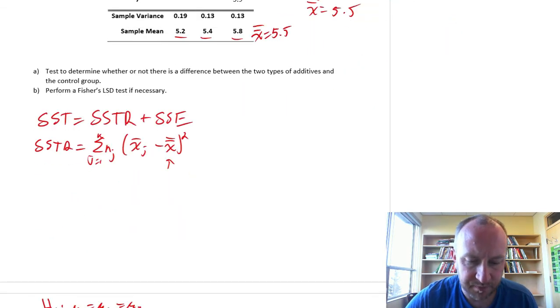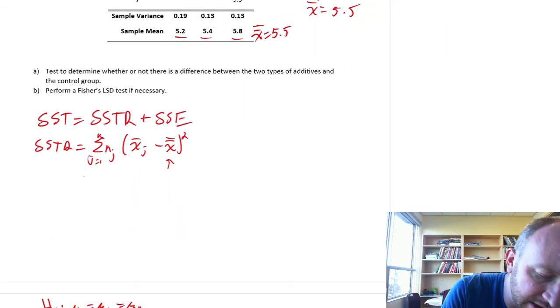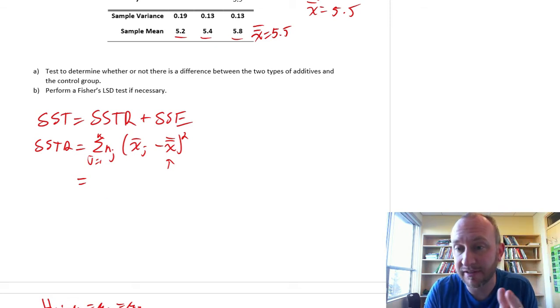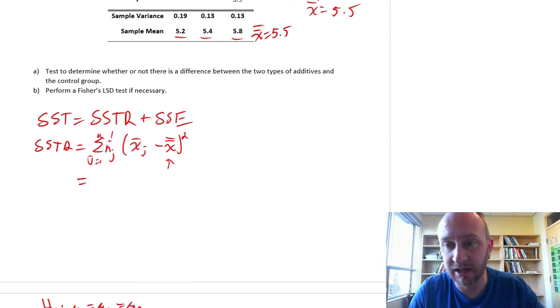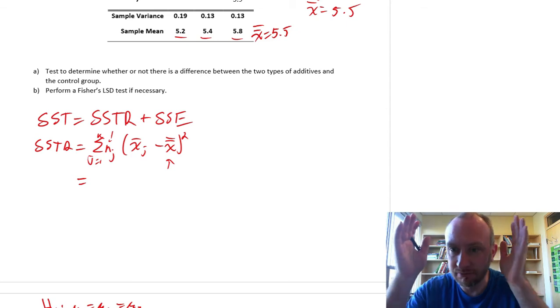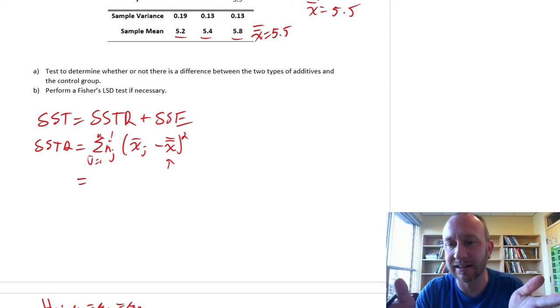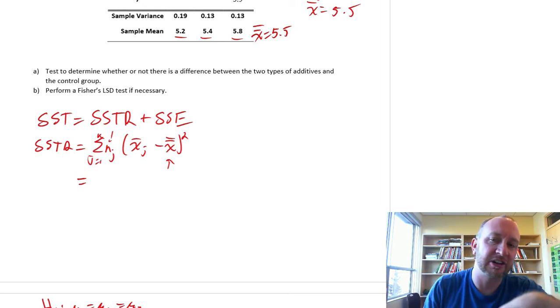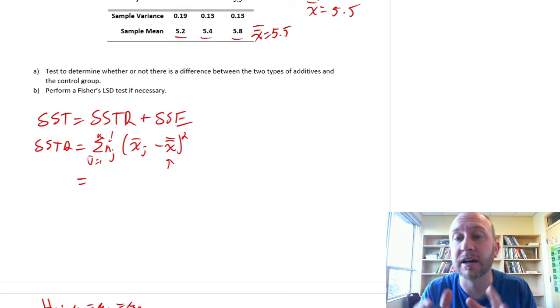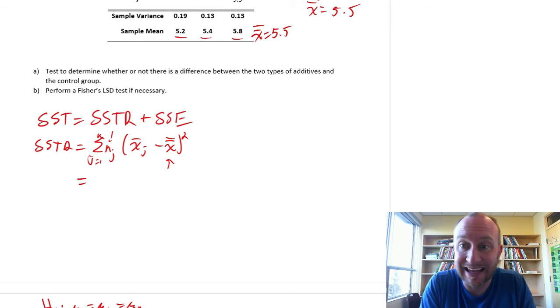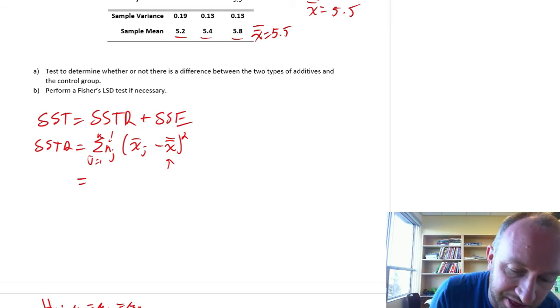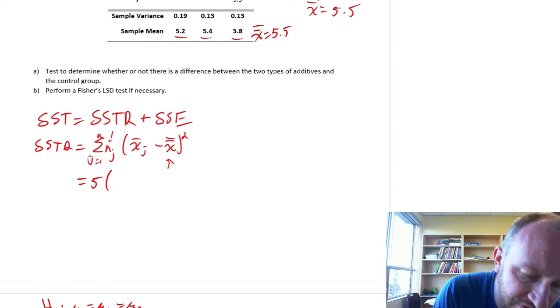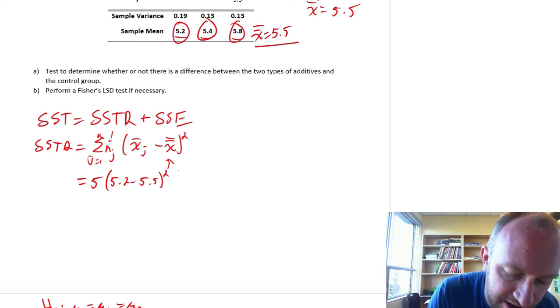Let's go ahead and calculate our sum of squares treatment. Here it's going to be a different sample size, so this is why this n is contained within that summation sign. As you'll see in some of the later ANOVAs that we'll do, sample sizes will always be by design exactly the same size, and so that n gets factored out of the summation. But in this case, because the samples can be different size, the n is contained within the summation sign. So this is 5 times 5.2 minus 5.5 squared. I'm looking at these three means and their difference from that grand mean.